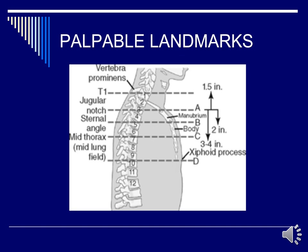Looking at our palpable landmarks, make sure you are fully aware of where your landmarks are. Your vertebral prominence is at the level of C7/T1. Your jugular notch is at T2/T3. Your sternal angle will be at T4/T5. The mid portion of your chest is at C7. Your xiphoid process or ensiform tip is at T9/T10.